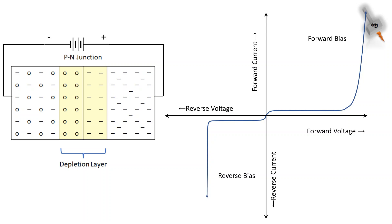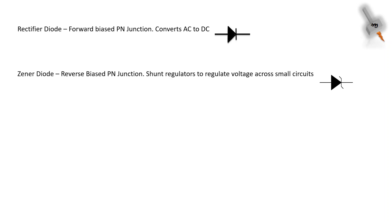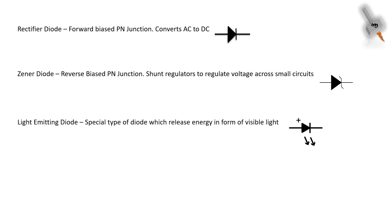Now let's see a few types of p-n junctions. The first one is the rectifier diode, which is a forward biased diode and its function is to convert AC to DC voltage. The second one is the zener diode, which is a reverse bias diode and its function is to regulate the applied voltage on a small circuit.